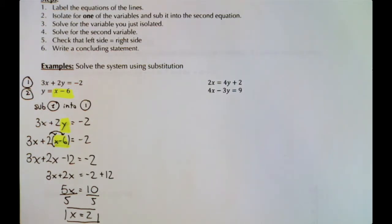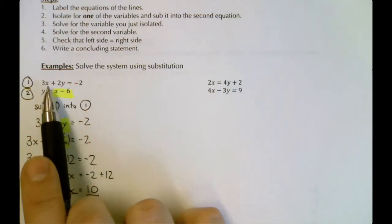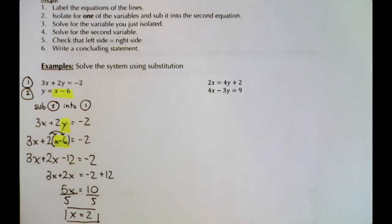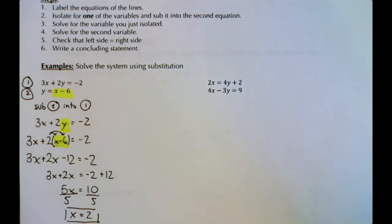Now that we have x = 2, we need to find y. We go back to either of these equations, substitute in 2, and solve for y. Whichever equation we choose, we'll get the same value of y if we do the math correctly, because there's only one solution to a linear system. For all questions in this lesson there will be exactly one solution.